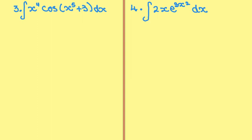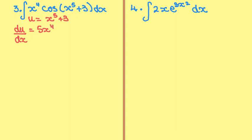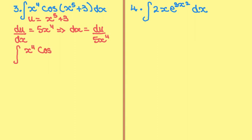Question 3: integrate x to the power of 4 times cos(x to the power of 5 plus 3) dx. In this example I'm going to let u equal x to the power of 5 plus 3. Differentiating gives du/dx equal to 5x to the power of 4. Rearranging to find dx gives dx equal to du over 5x to the power of 4. Substituting everything back in, I end up with the integral of x to the power of 4 times cos(u) times du over 5x to the 4. The x⁴ terms cancel.